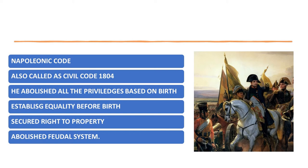The fifth reform is: he freed peasants from serfdom and manorial dues. Previously, people were working without any wages. Under Napoleon's reforms, salaries were started to be given, and manorial dues — meaning fees or charges owed to the lord — were abolished.